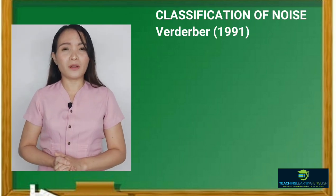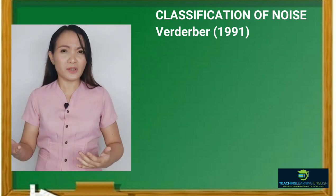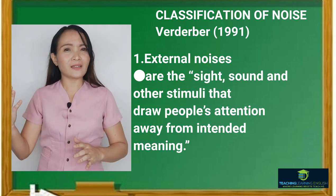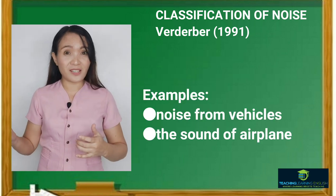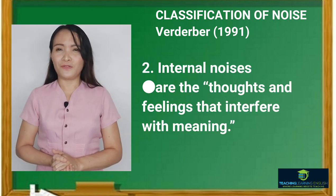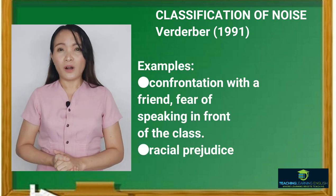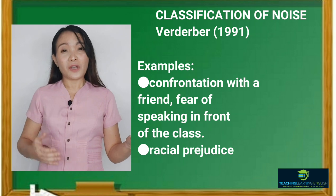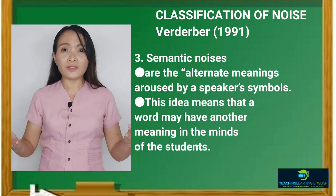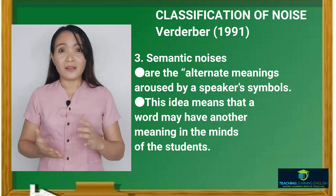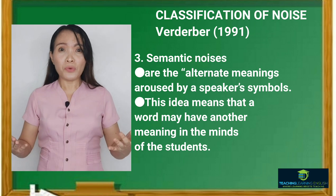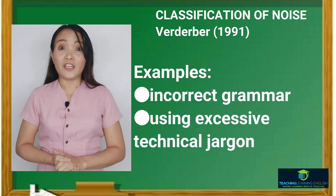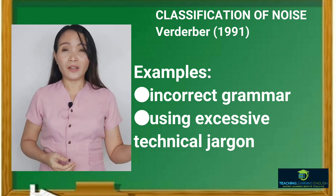A famous author named Verderber mentioned a similar idea of barrier when he classified noise into three kinds: external, internal, and semantic noise. External noises are the sights, sounds, and other stimuli that draw people's attention away from the intended meaning — examples include noise from vehicles and the sound of airplanes. Internal noises are the thoughts and feelings that interfere with meaning — examples include confrontation with a friend, fear of speaking in front of the class, and racial prejudice. Semantic noises are the alternate meanings arising from a speaker's symbols — a word may have another meaning in the minds of listeners, affected by the language and culture they grew up in. Examples include incorrect grammar and using excessive technical jargon.